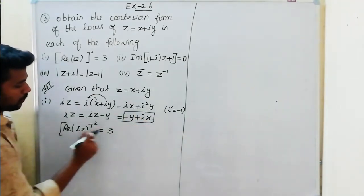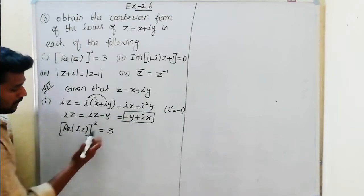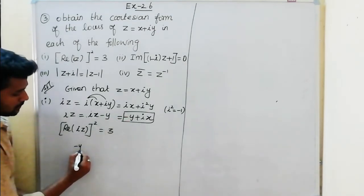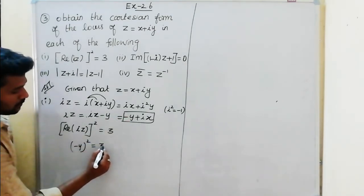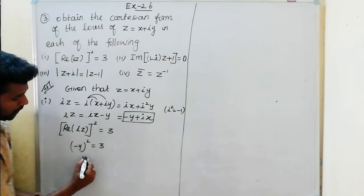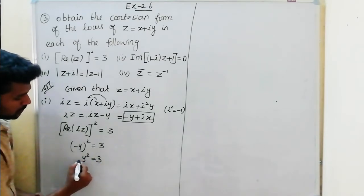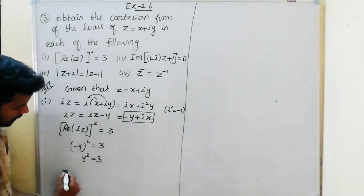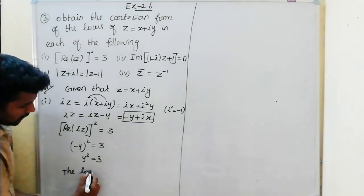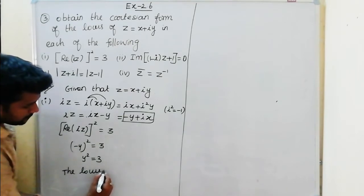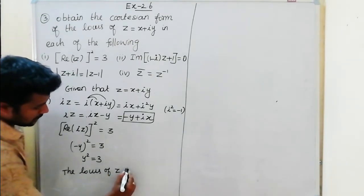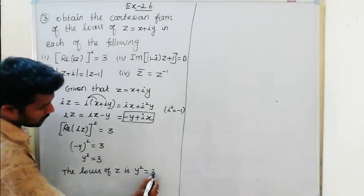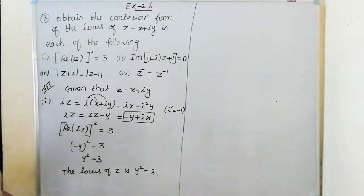The real part gives minus y, and the whole square is equal to 3. So y square is equal to 3. Therefore, the locus of z is y square equal to 3.